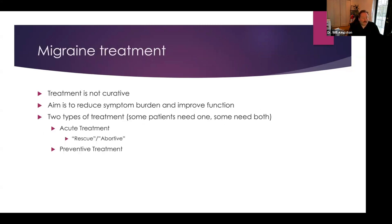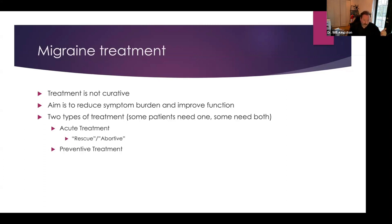With that said, I want to launch into the ways in which we treat migraine. By and large, there are two types of strategies we think about, and some people will require one, some people will require both. Unfortunately, treatment is not curative—there is no cure for migraine. What we really try to do is reduce the symptom burden and try to improve function. The two types of treatments are acute treatment—also referred to as rescue or abortive treatment—and preventative treatment, and I'll talk about the specifics of both and how to navigate each.